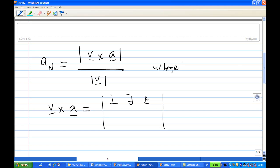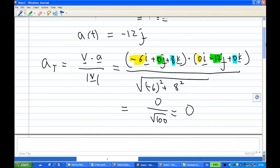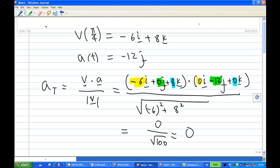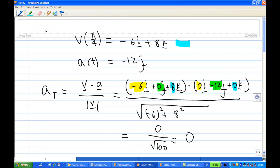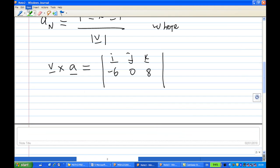Where v is minus 6i plus 8k. This is my v here, minus 6, 0, 8. And my a, acceleration is equal to minus 12j. So you put down, acceleration is 0, minus 12, 0.